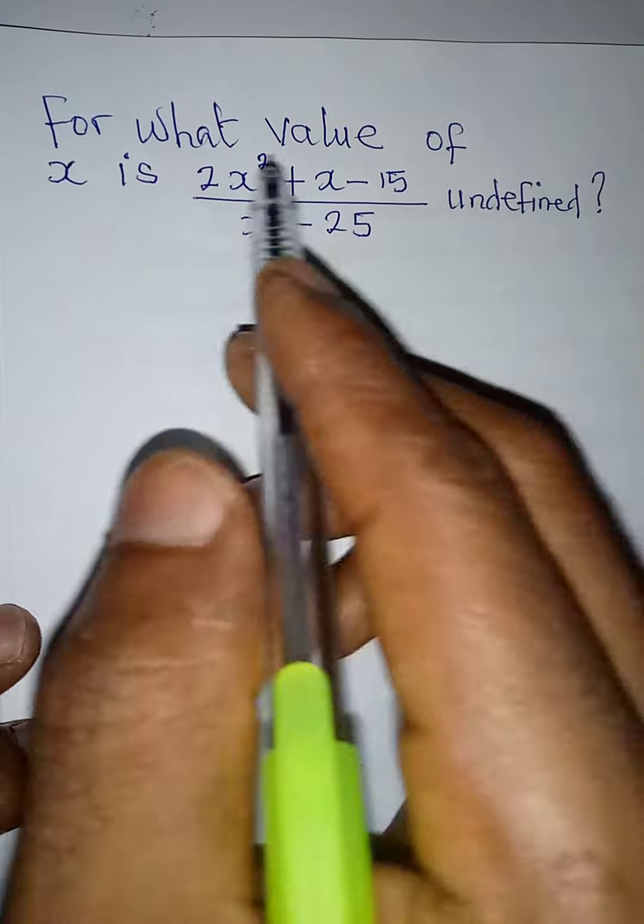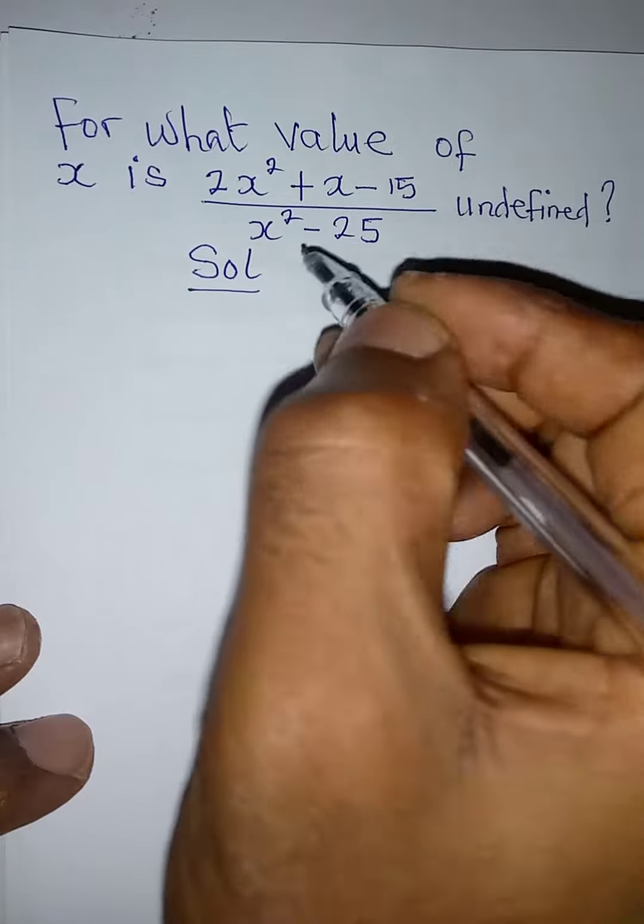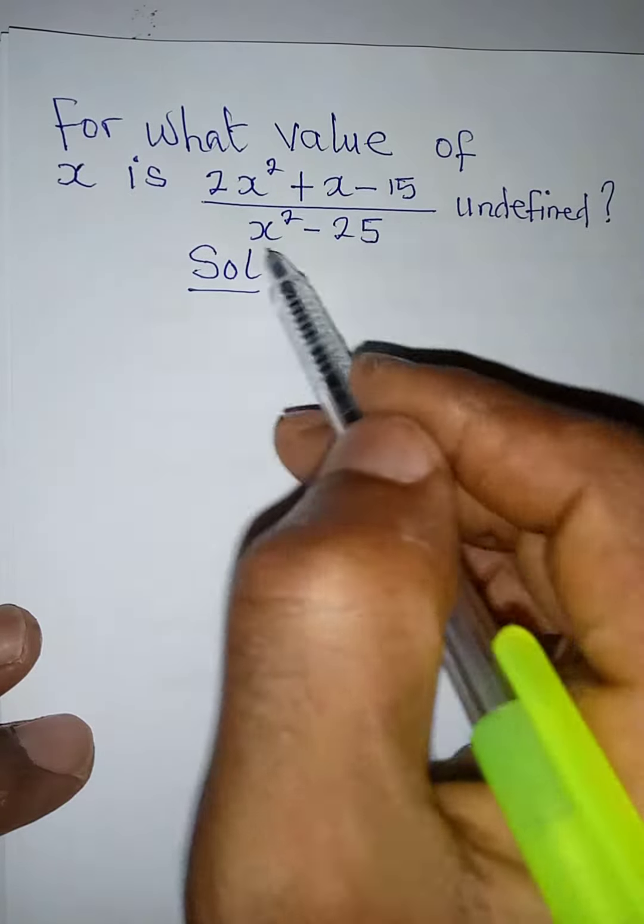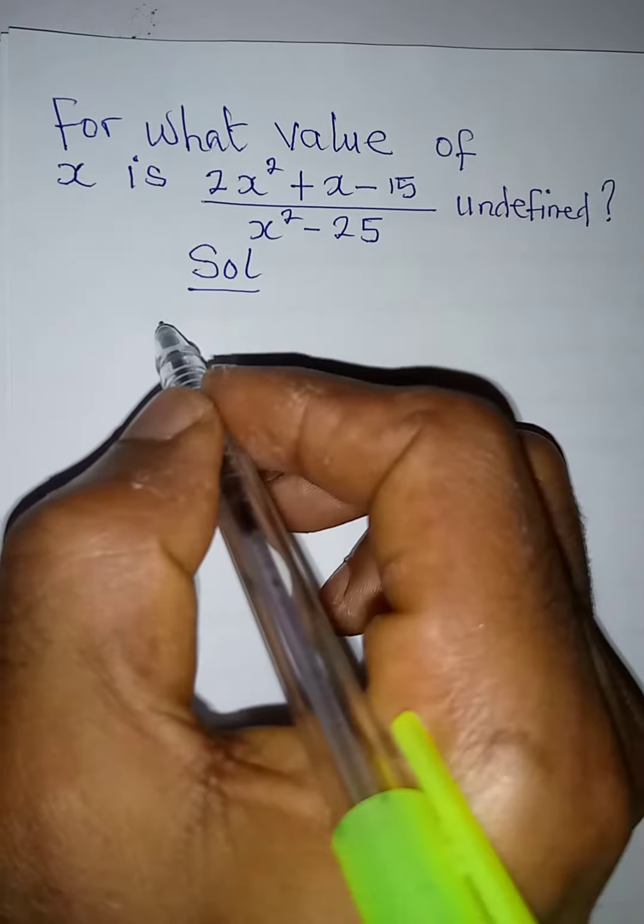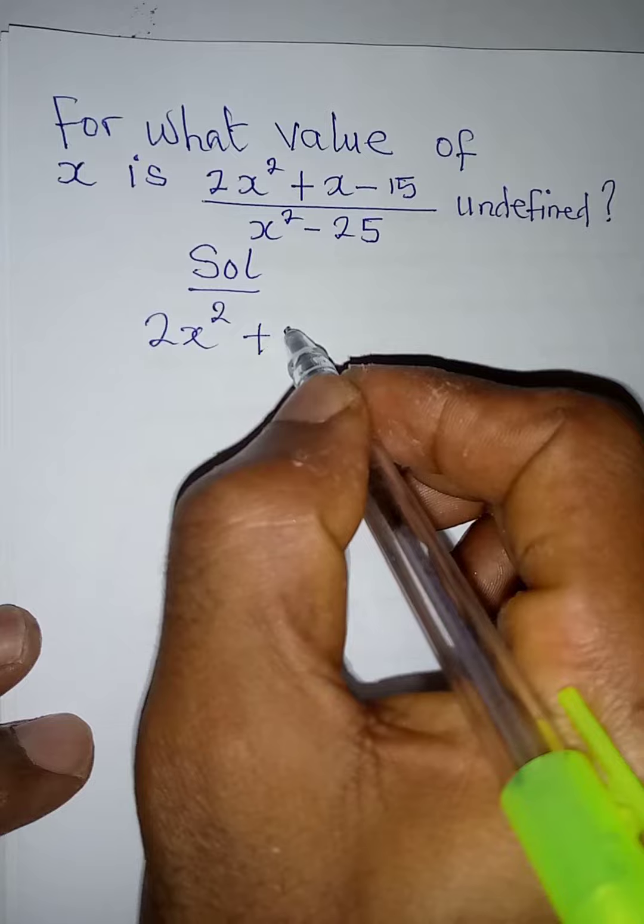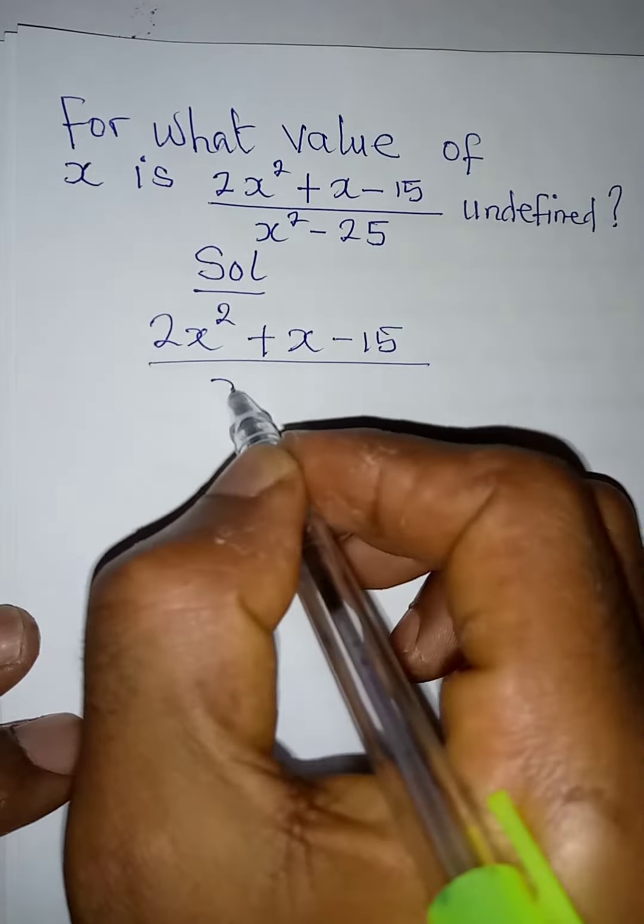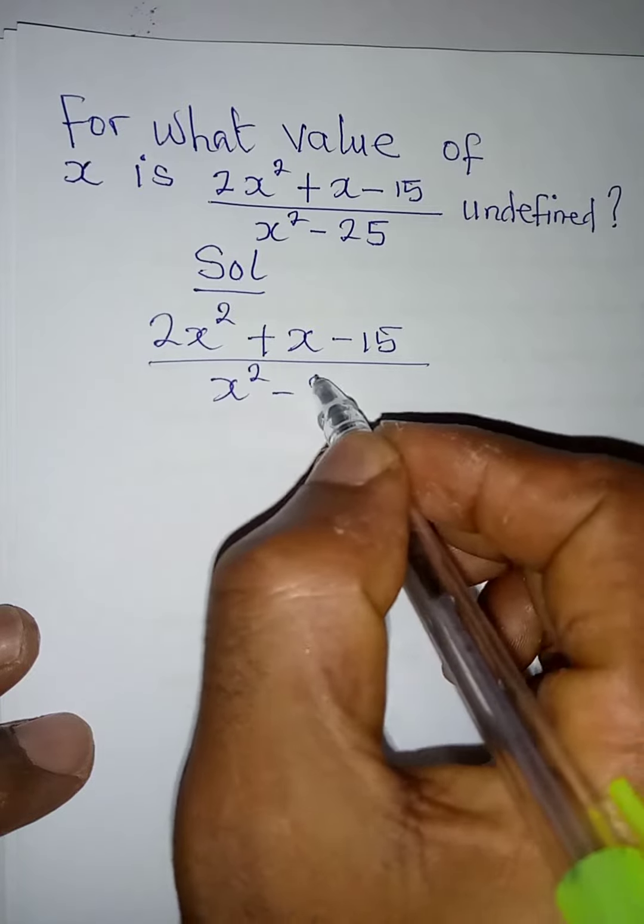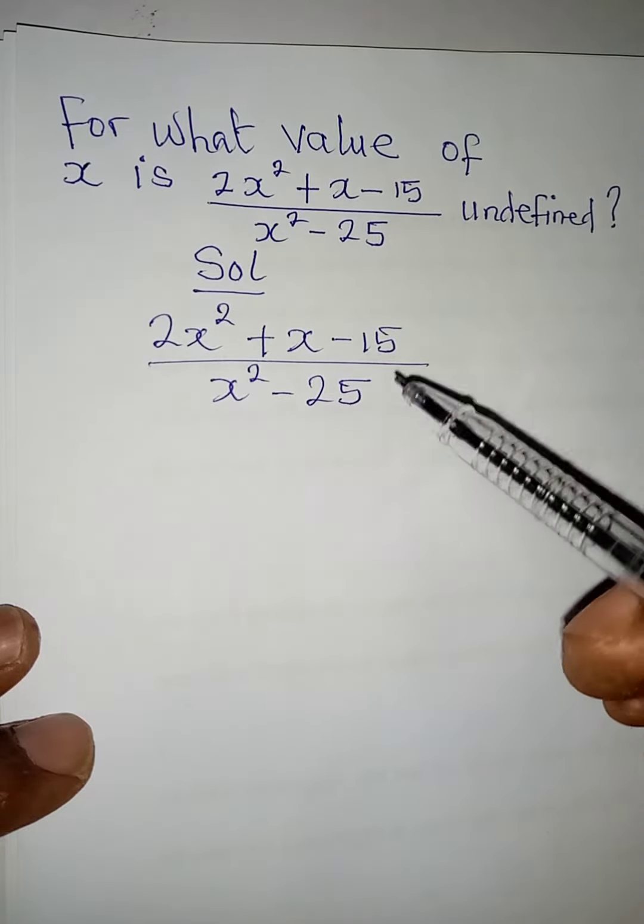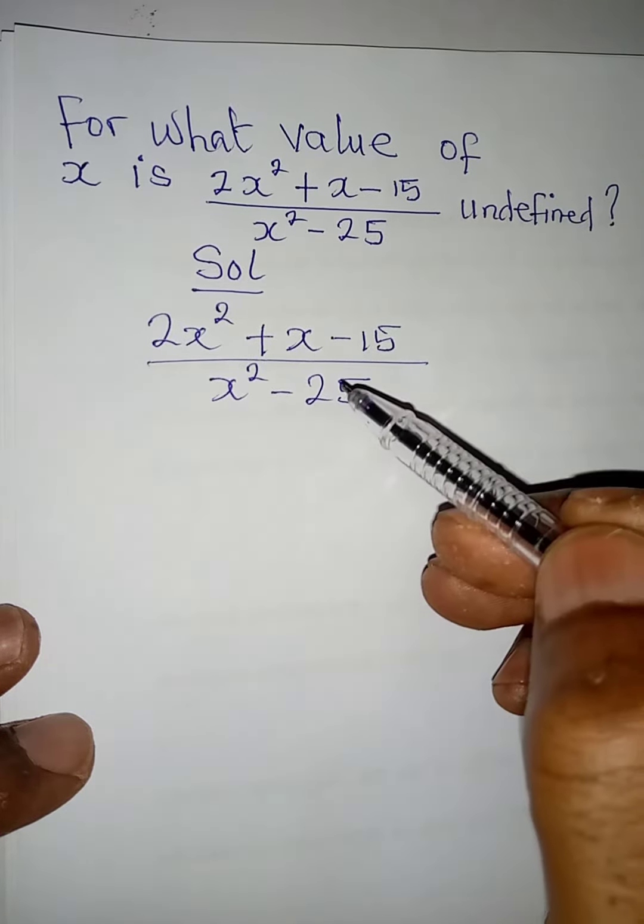Hello everyone, let's answer this question very quickly. Solution: for what value of x is the whole of this expression undefined? The expression is 2x squared plus x minus 15 all over x squared minus 25. So this is the expression. For which value of x or for what value of x is this expression undefined?